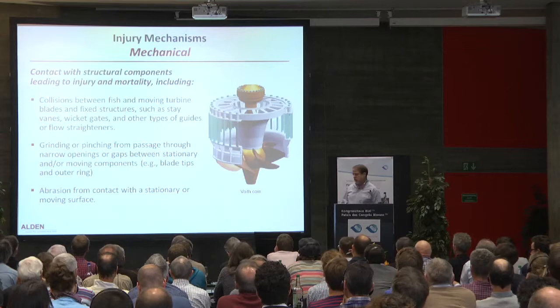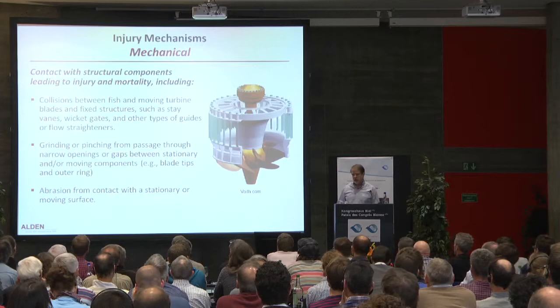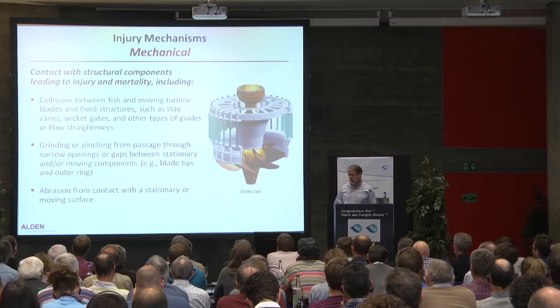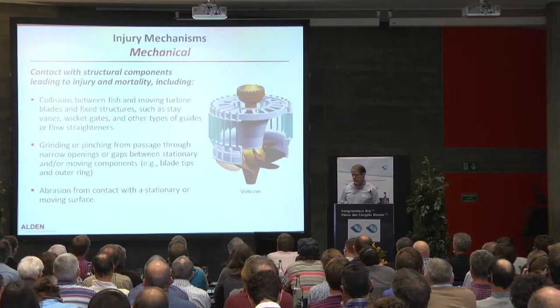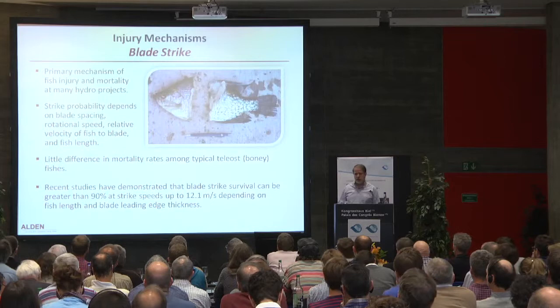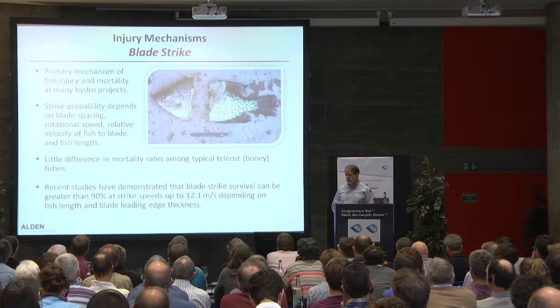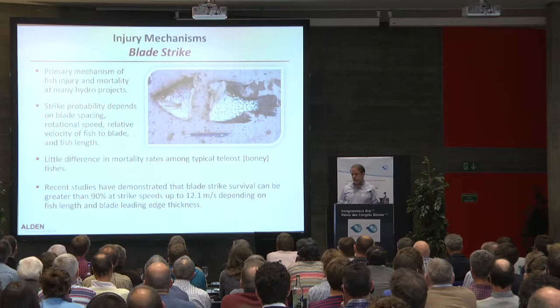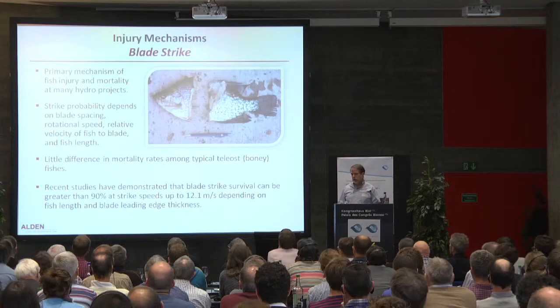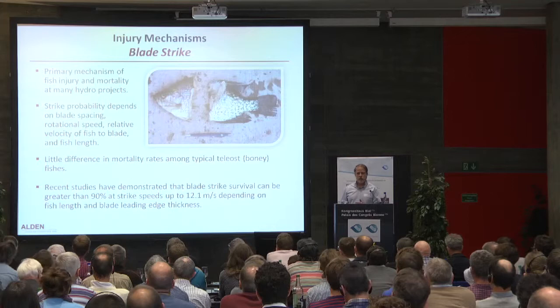Moving on to mechanical damage: this covers collisions between fish and moving turbine blades and fixed structures — stator vanes, wicket gates, blades, and flow straighteners — as well as grinding and pinching between components, and abrasion from contact with surfaces. When it comes to mechanical damage, blade strike is definitely the primary injury mechanism. For many hydro projects, particularly low-head projects where pressure is not a big issue, this will be the primary source of injury and mortality. Strike probability depends on blade spacing, rotational speed, relative velocity of the fish to the blade, and fish length.